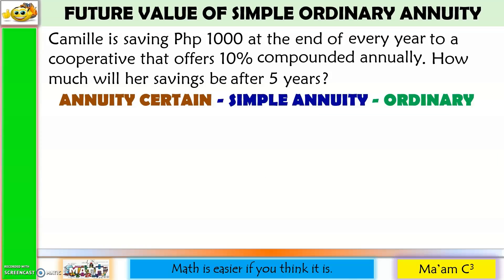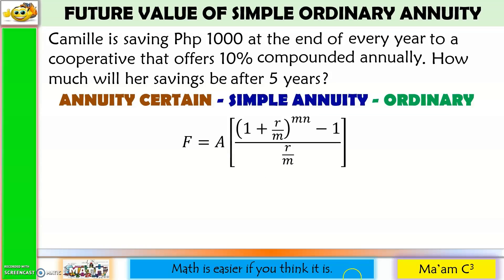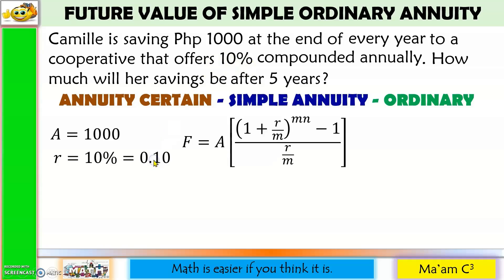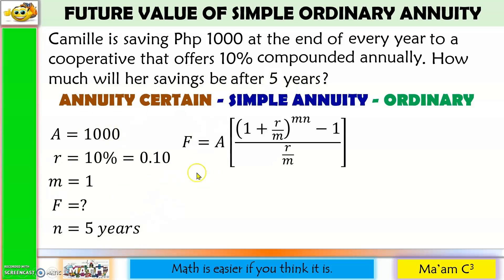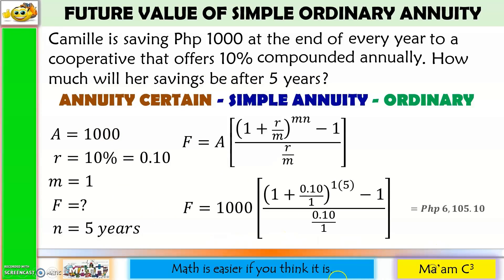Let us discuss the same problem but this time using the formula. Camille is saving A = 1,000 pesos at the end of every year. R is 0.10, compounded annually so M = 1. We are looking for the future value after 5 years, so N = 5. Substituting these values gives us 6,105 pesos and 10 centavos — exactly the same as our previous answer.